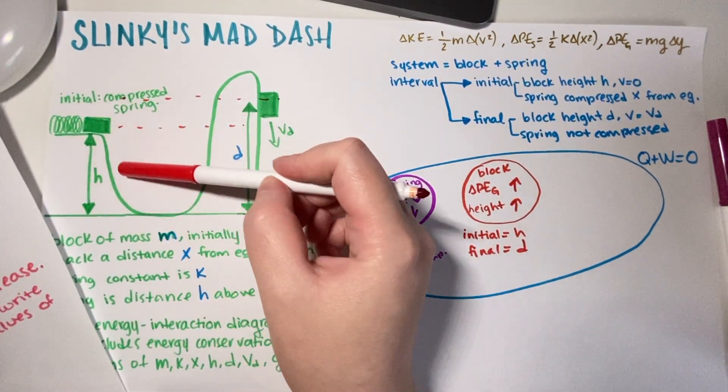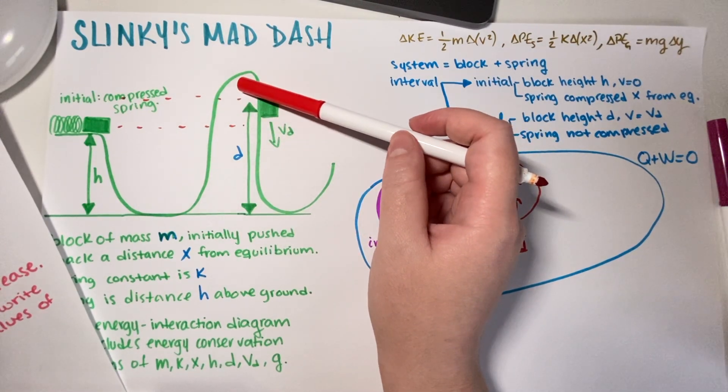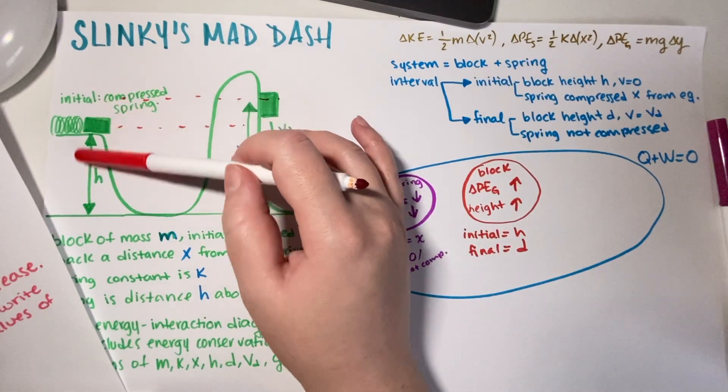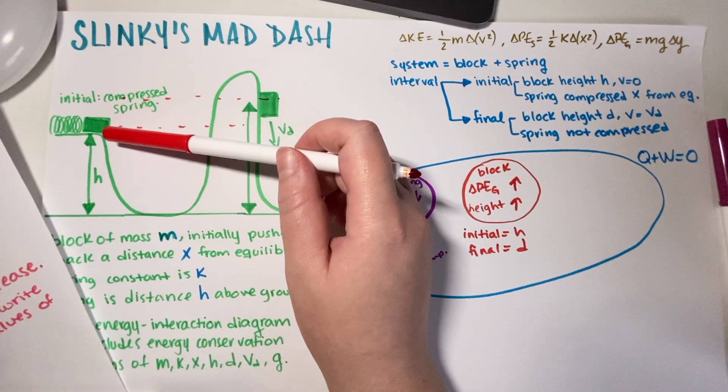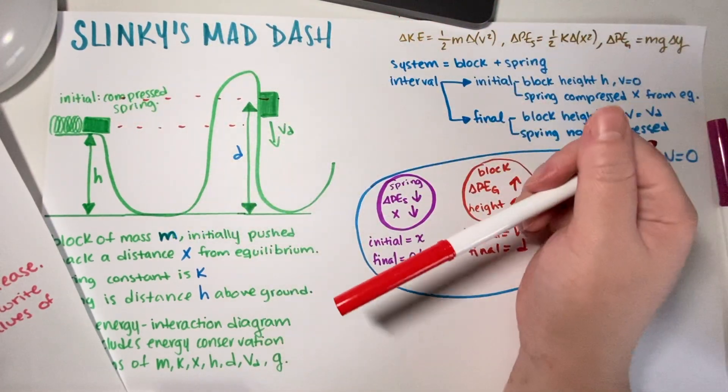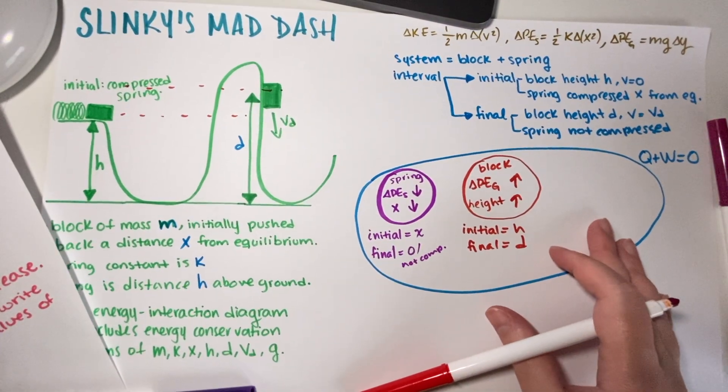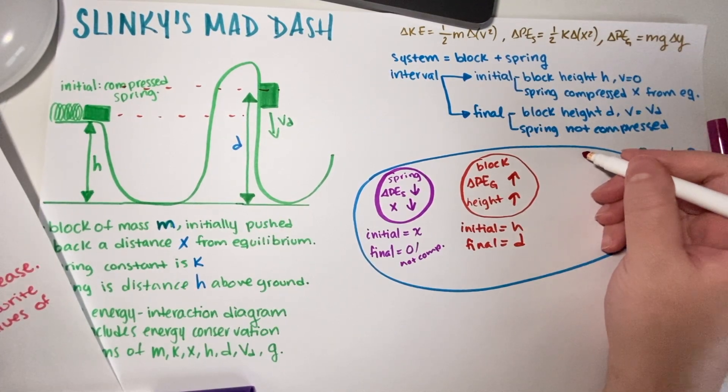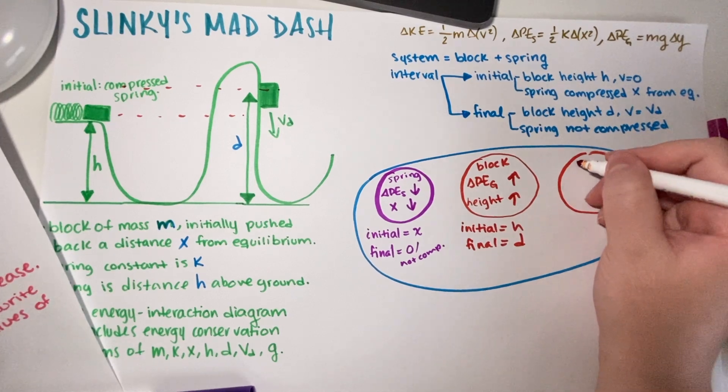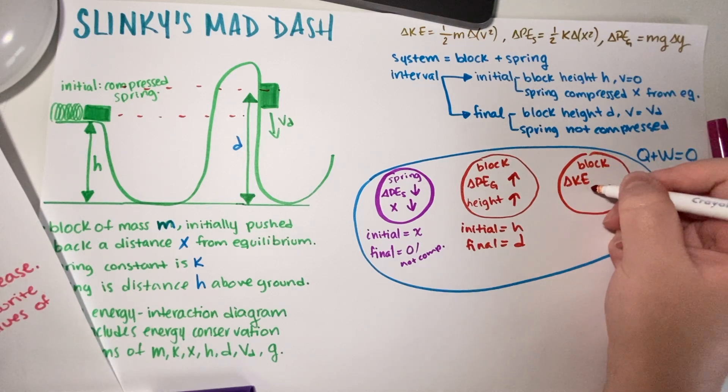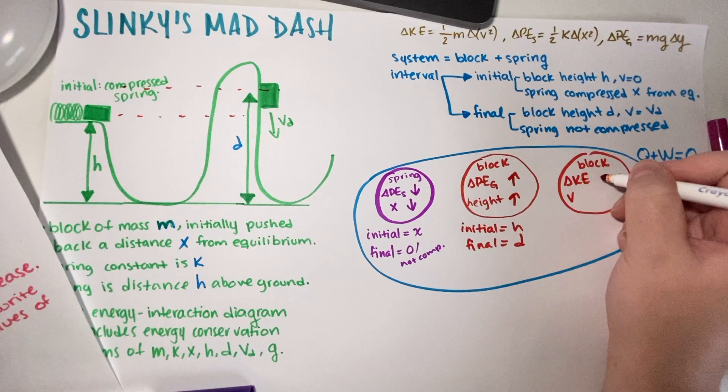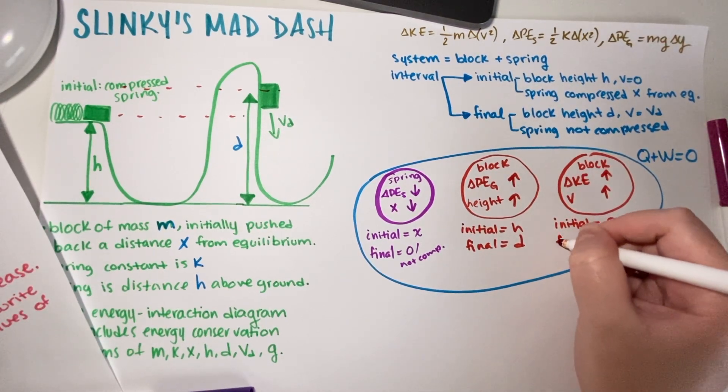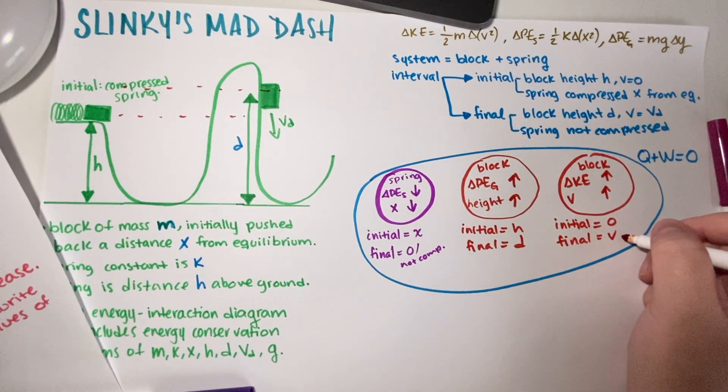Now please notice that even though the block went up and then down and then up and then down, the only thing that matters is your initial and your final states. Everything that happened in between really doesn't matter. It could have done seven loops. If it started at the same height and ended at the same height, then it really doesn't matter anything that happened in between. So we just have our initial and final. Energy is a state function. This is why this is the case. Now we also had a change in velocity, and velocity is an indicator for kinetic energy. So we need a bubble for kinetic energy.